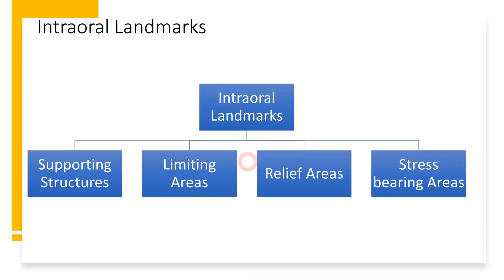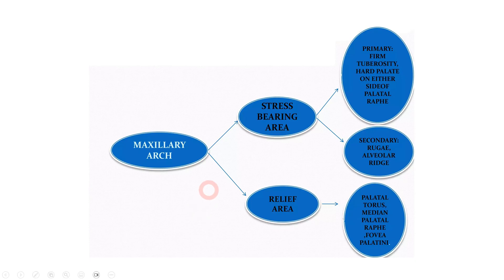When we talk about anatomical landmarks, whether in maxilla or mandible, we mainly categorize them into three categories. Firstly, the stress bearing areas, which are also called supporting structures. Other than that we have relief areas, and then we have limiting areas. In this video we'll talk about these three categories based on maxilla. The relief areas consist of palatal torus, median palatal raphe, and fovea palatinae.